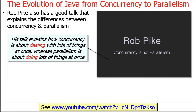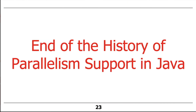Concurrency is really about coordinating and synchronizing and making sure things interact properly, often involving shared mutable state. Parallelism, by contrast, is about eliminating interaction and using embarrassingly parallel decompositions — divide and conquer — without sharing mutable state. That's the end of our quick summary of the history of parallelism support in Java.